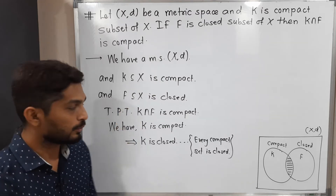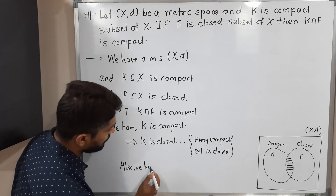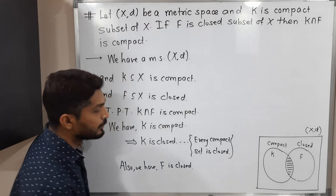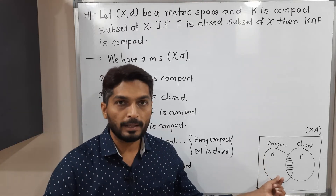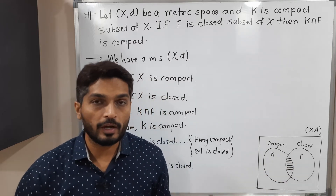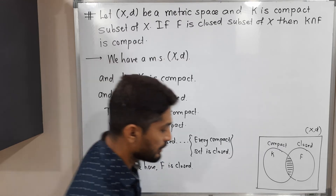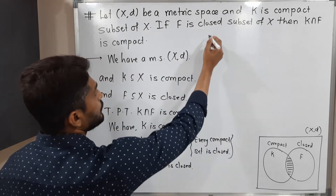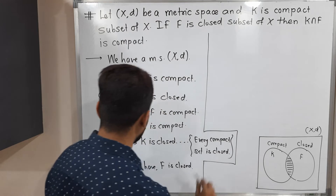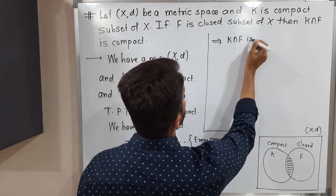We also have the second piece of information that F is closed. So now we have two closed sets: K is closed (since every compact set is closed) and F is also closed. We know that if you have any arbitrary closed sets, their intersection is also closed. So therefore K intersection F is closed.